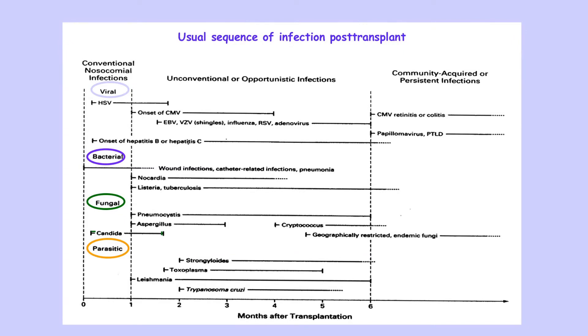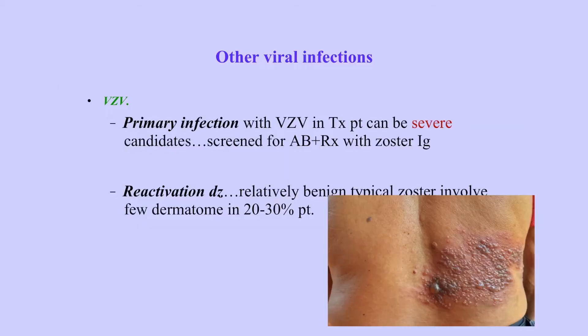Infection was also mentioned before. Early on in the first month, it's surgical infections and donor-related infections. Then it's more opportunistic infections. But later, past the long term, these are more community-acquired or persistent infections. Among opportunistic infections, CMV was an important one before we had prophylaxis. You can also see patients with herpes zoster or varicella — you can have primary infection or reactivation, presenting with vesicular dermatomal rash.